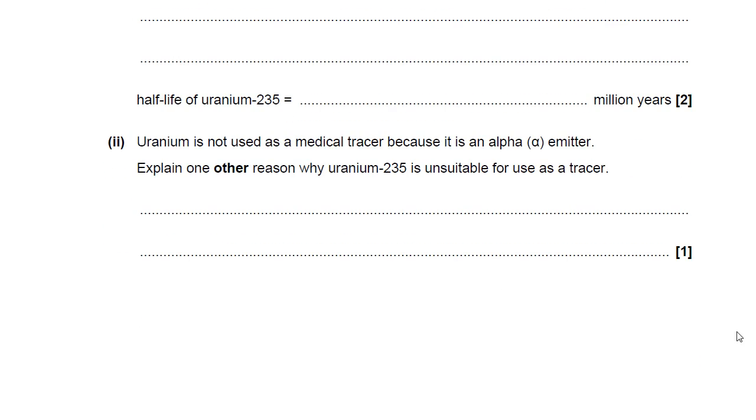Uranium is not used as a medical tracer because it's an alpha emitter. So, we don't use uranium as a medical tracer. Medical tracers are radioactive elements that we put inside the body to analyze the flow of blood normally, or sometimes to find a particularly active part of the body, like a cancer, like a tumor. One of the reasons it's not used is because it's an alpha emitter. Alpha is the most ionizing, so we don't want it really inside the body. But you need to explain one other reason why uranium-235 is an unsuitable tracer. Pay attention to when there are emboldened words like other in this case. Do not talk. It has nothing to do with it being an alpha emitter. You've already been told that.